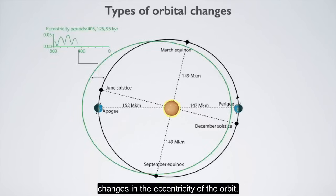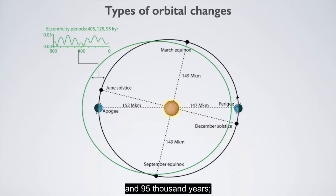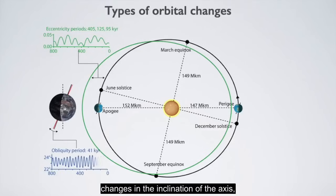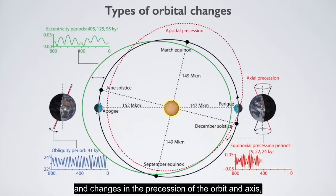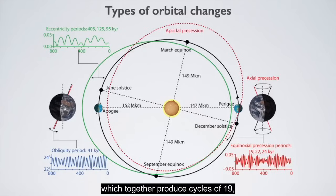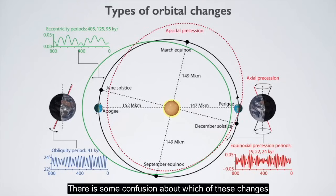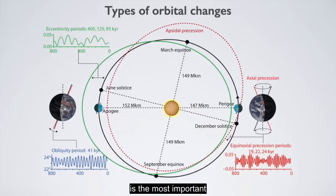There are three types of orbital changes. Changes in the eccentricity of the orbit, which produce cycles of 405,000, 125,000, and 95,000 years. Changes in the inclination of the axis, which produce cycles of 41,000 years. And changes in the precession of the orbit and axis, which together produce cycles of 19,000, 22,000, and 24,000 years.